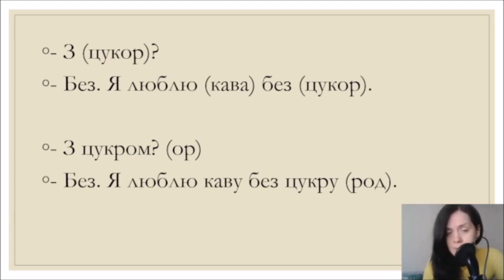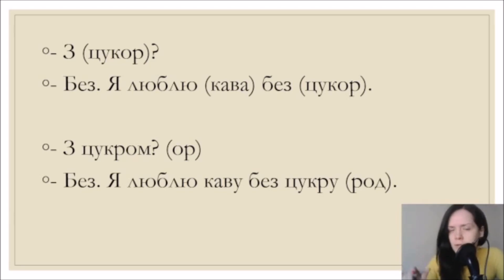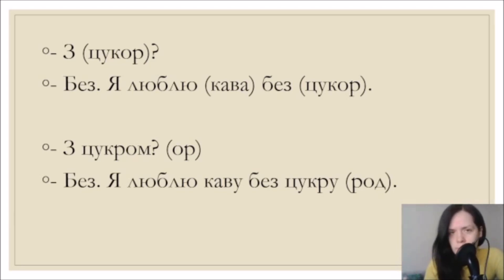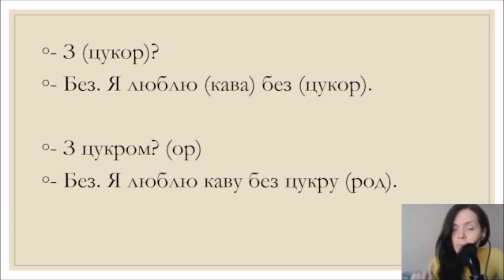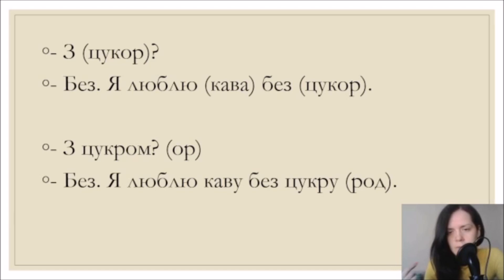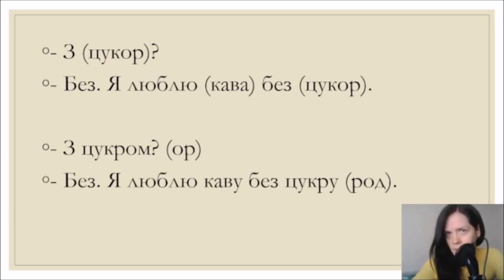Я люблю каву - accusative, знахідний відмінок - I love what? Direct object. Без цукру - after preposition без, we use genitive. So the rule is: with something - instrumental case з цукром; without something - genitive case без цукру. This applies broadly: без води, без снігу, без тепла, без розуміння, без проблем - all genitive.